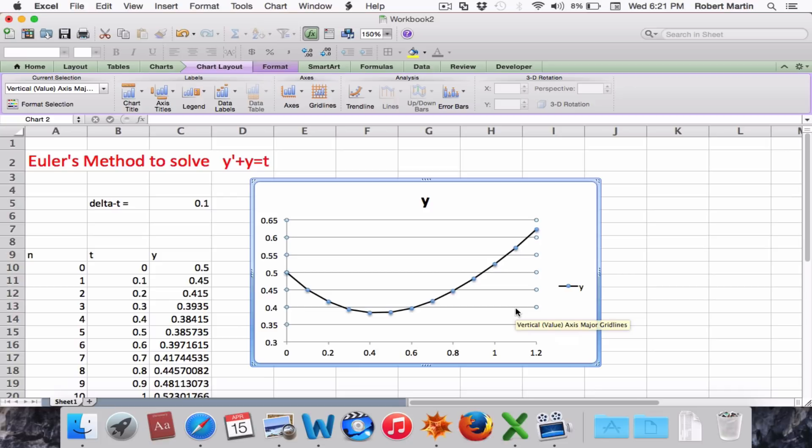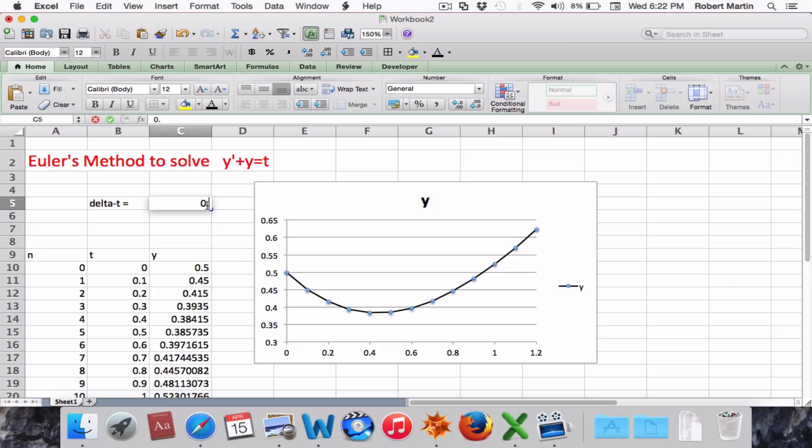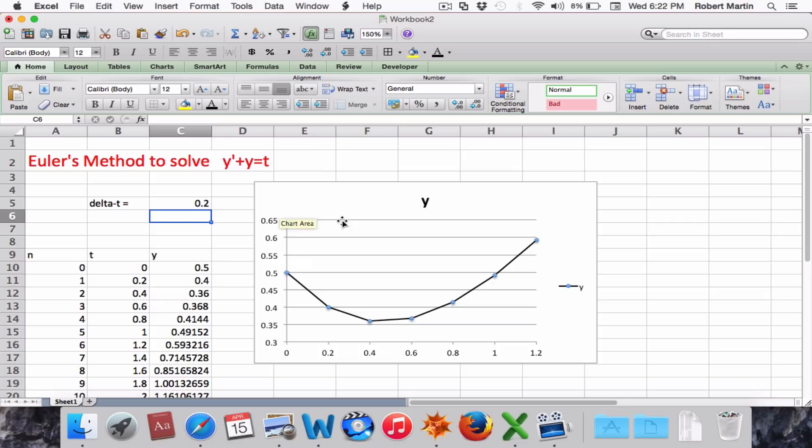Next, we'd like to plot the exact solution and compare them. But before we do that, notice we can go over to the cell storing the delta t value and choose a different delta t of perhaps 0.2. And notice how it dynamically updates our results. More on that in a moment.